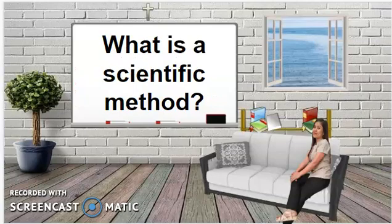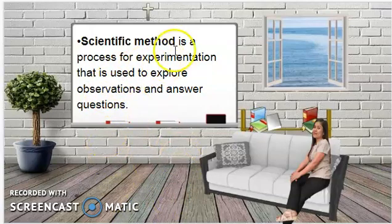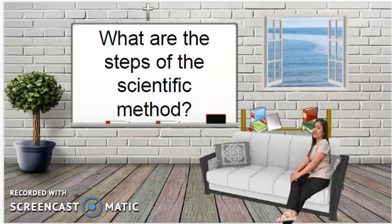So what is the scientific method? The scientific method is a process for experimentation that is used to explore observations and answer questions. It comprises steps that are always used by scientists in order to acquire knowledge.